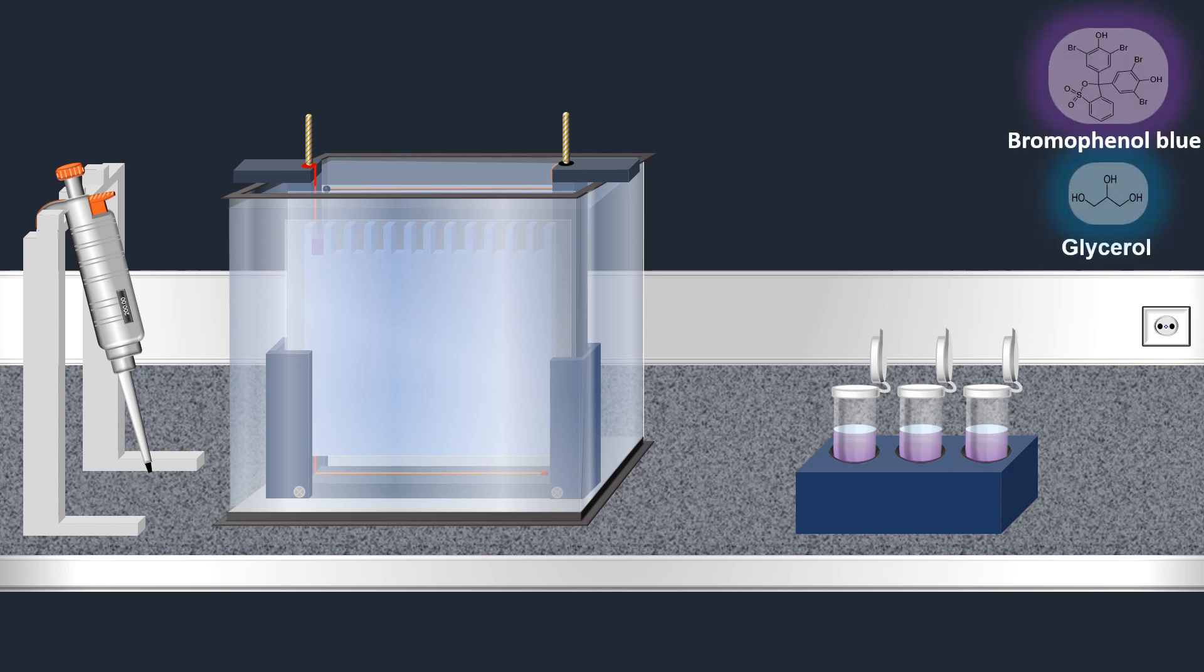As we have seen previously, bromophenol blue and glycerol are present in the samples. Bromophenol blue is a dye that is used for visualizing the sample in the well, and glycerol increases the density of a sample and is used to make the sample fall to the bottom of the sample well rather than just flow out and mix with the running buffer.